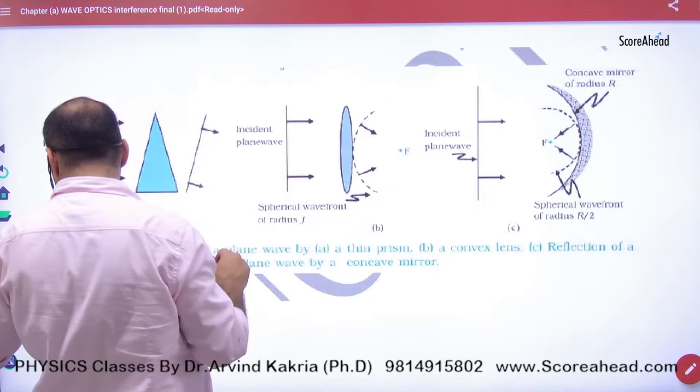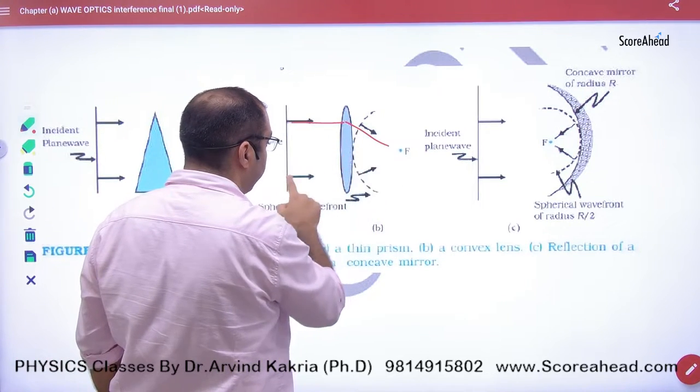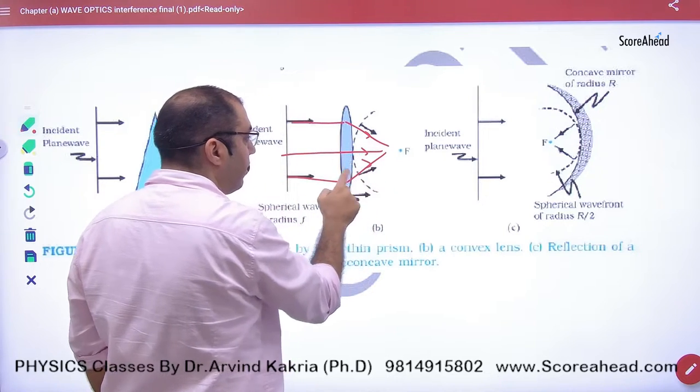Now, the lens is converging in nature. So what will the rays do here? They will converge. So how will the wavefront be?